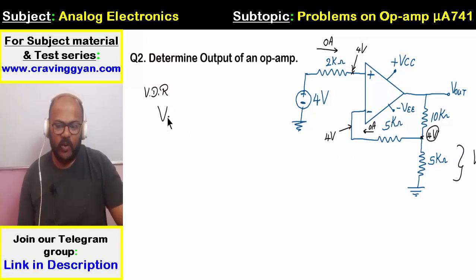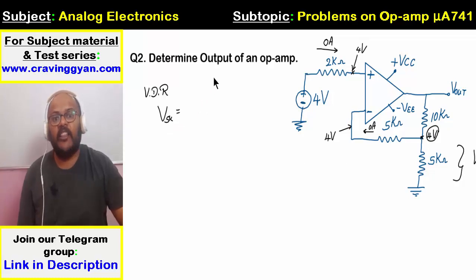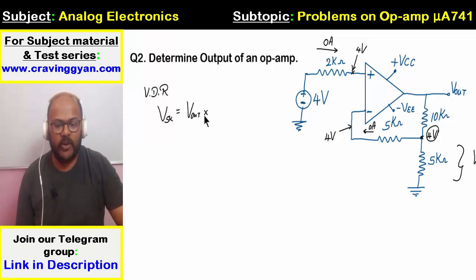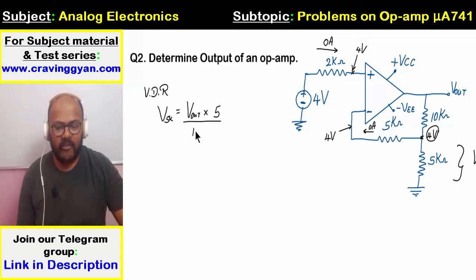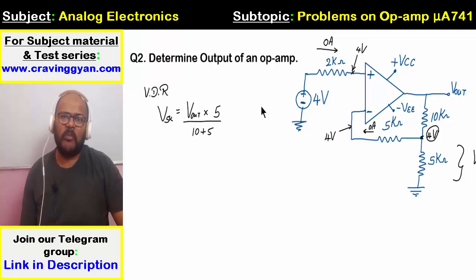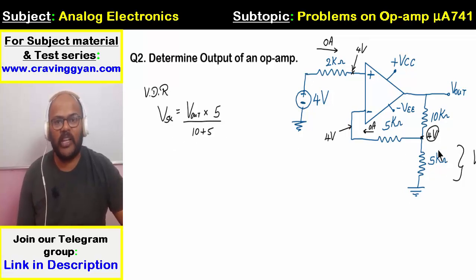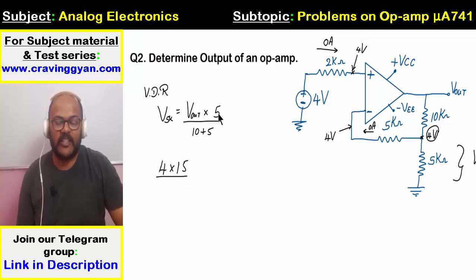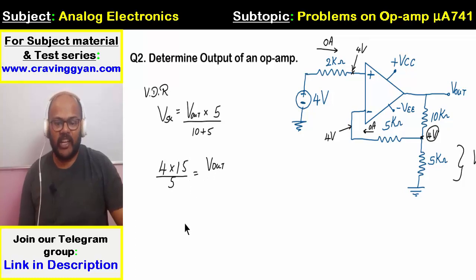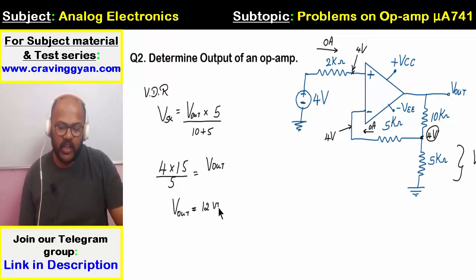Using the voltage divider rule, the voltage across the 5 kilo ohm equals Vout times 5k divided by (5+10)k = 15k. This equals 4 volts. Solving: 4 times 15 divided by 5 equals Vout, giving Vout equals 12 volts.